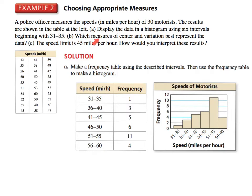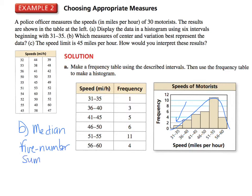Part B asks which measures of center and variation best represent the data. All you do first is look to see what's happening as you draw your line. It's skewed left. Since it's skewed, you're going to use the median to describe the center and the five-number summary to describe the variation.